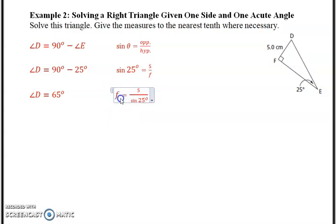So when I do that on my calculator, it's 5 divided by the sine of 25 degrees. Make sure your calculator is in degrees. And I get 11 decimal 831007 and so on. So this is where the nearest tenth is necessary. Remember, leave your units to the end. So your final answer is side F or side DE is equal to 11.8 centimeters.